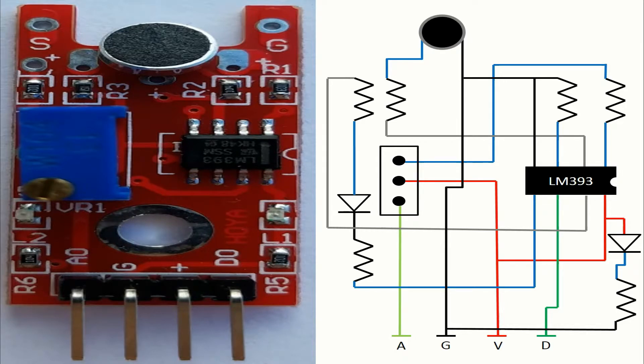The resistor R1 used in this module is 10kΩ. The resistor R2 is 100kΩ. The resistor R3 is 150Ω. The resistor R4 is 1kΩ. The resistor R5 is 1kΩ. And the resistor R6 is 100kΩ.